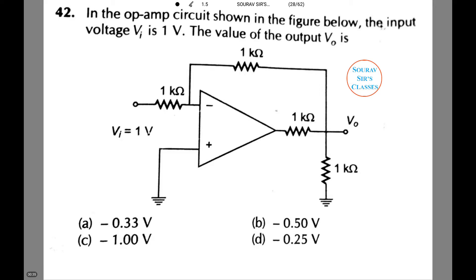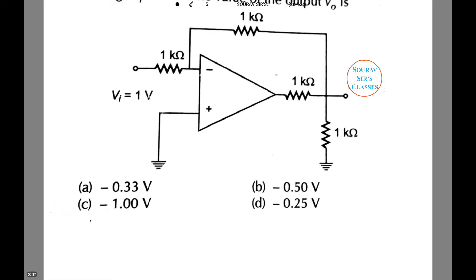Therefore this given circuit is an inverting op-amp circuit. Therefore the output can be calculated as V0 equals to minus 1 plus 1 by 1 into 1 by 1 plus 1. That is V0 equals to minus 2 into half or minus 1 volt. That is option C.